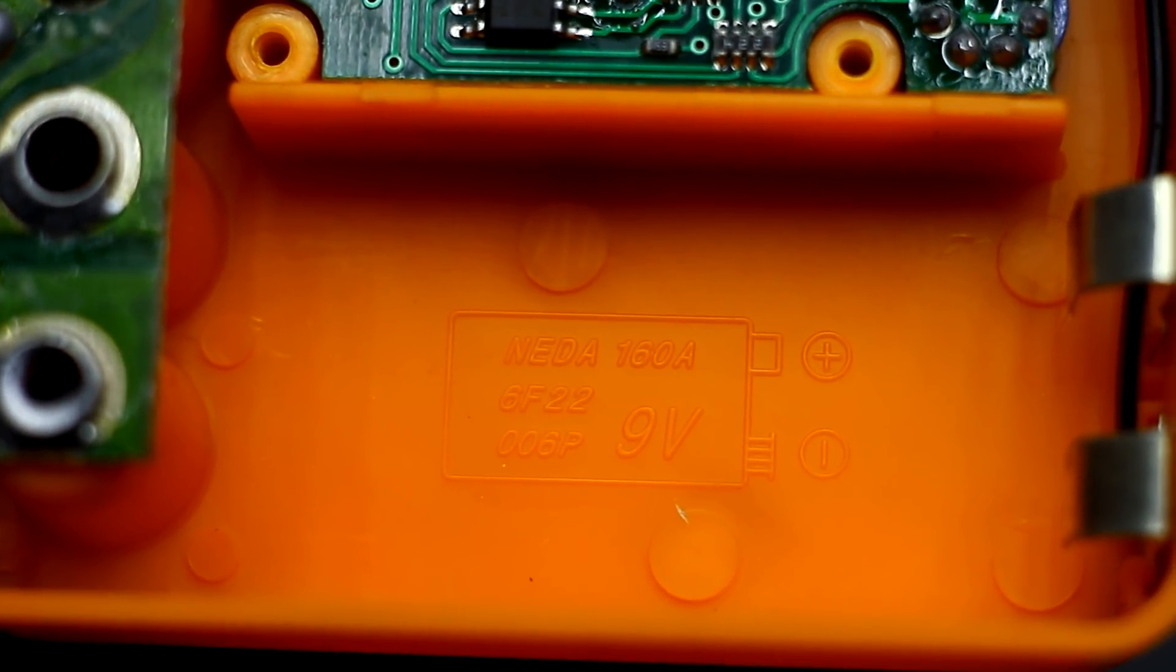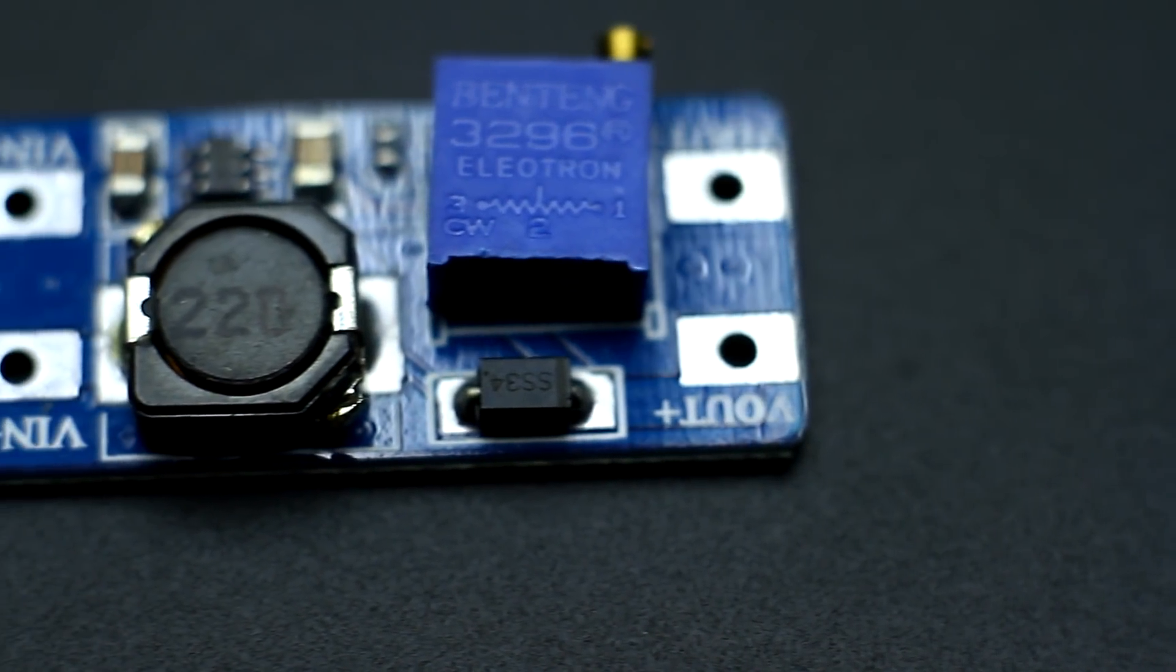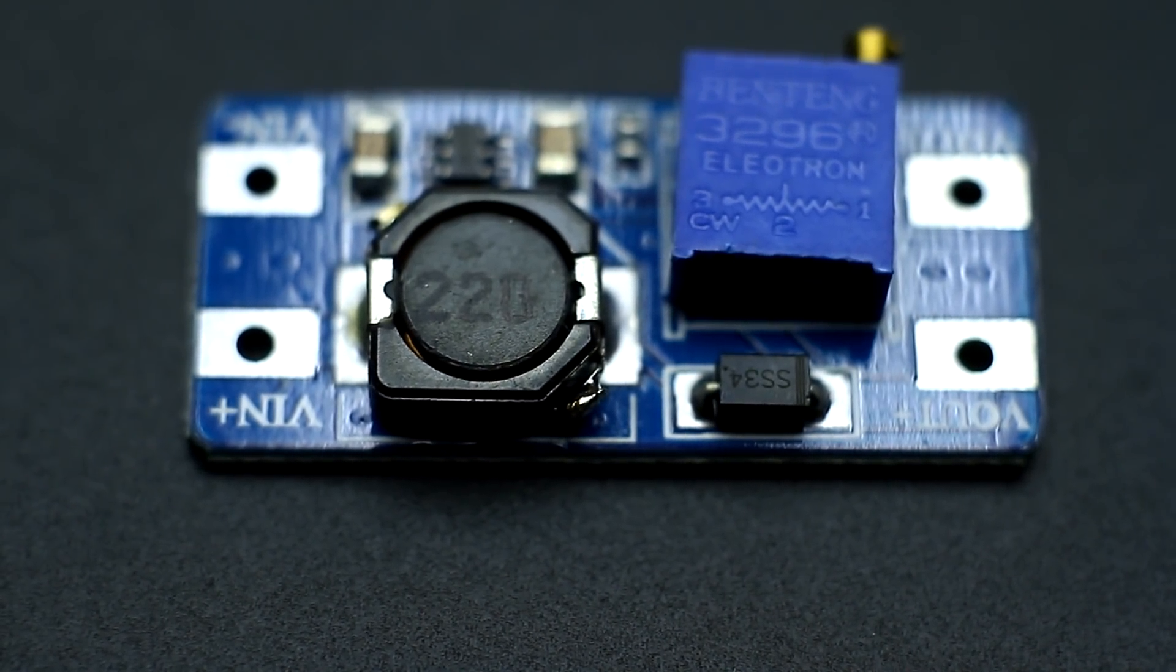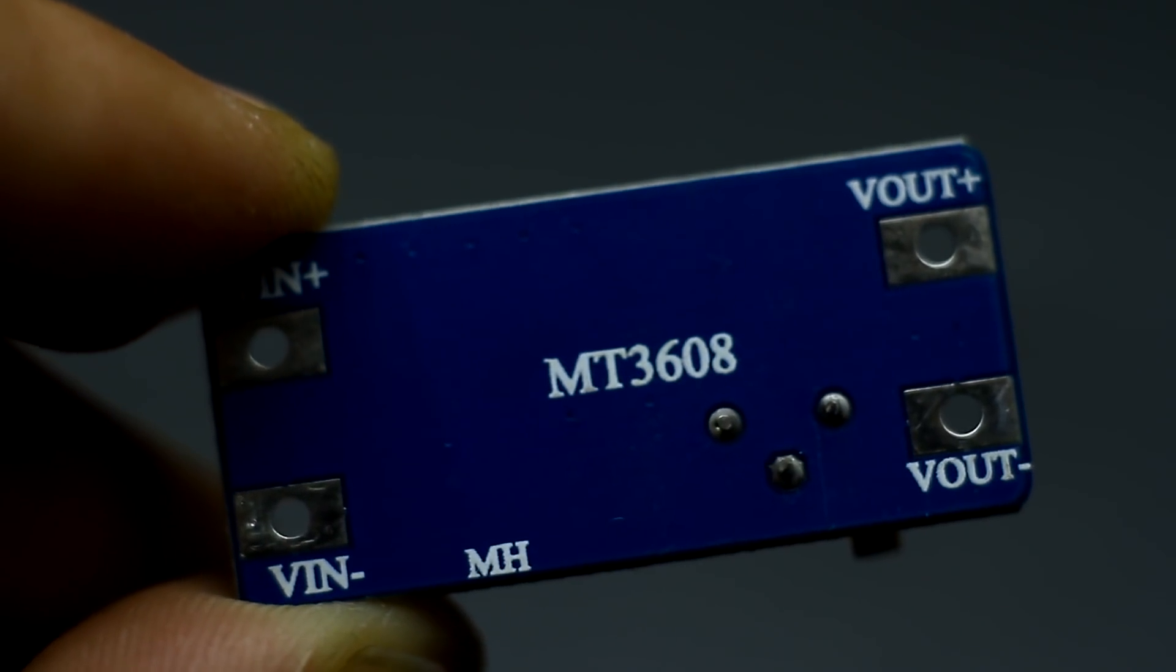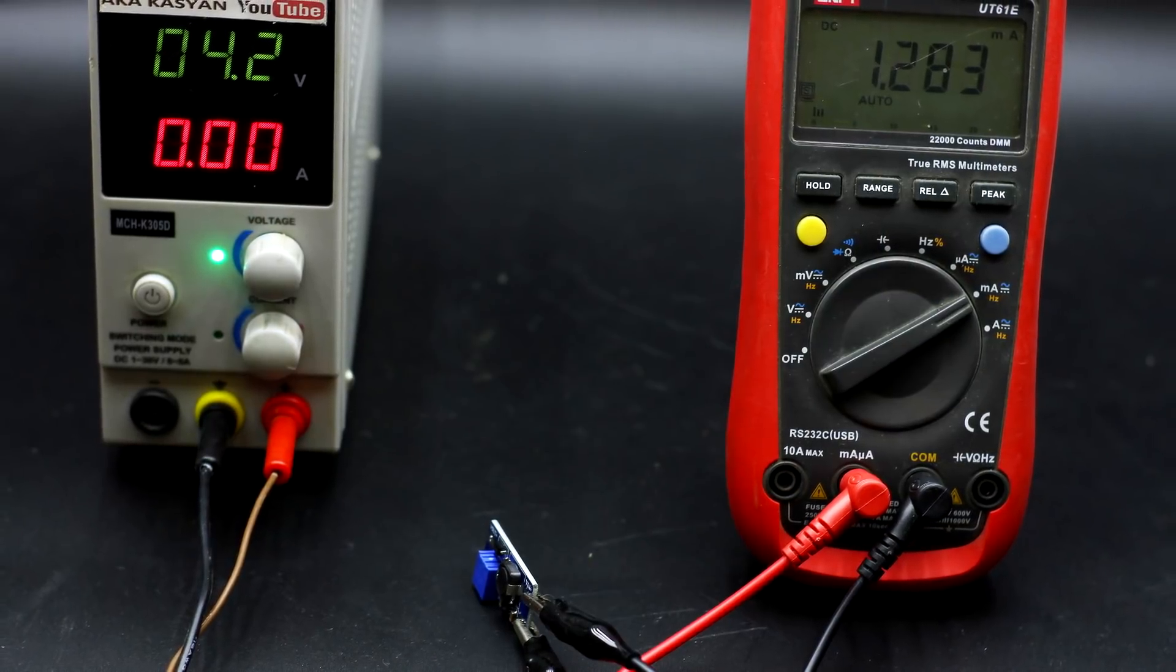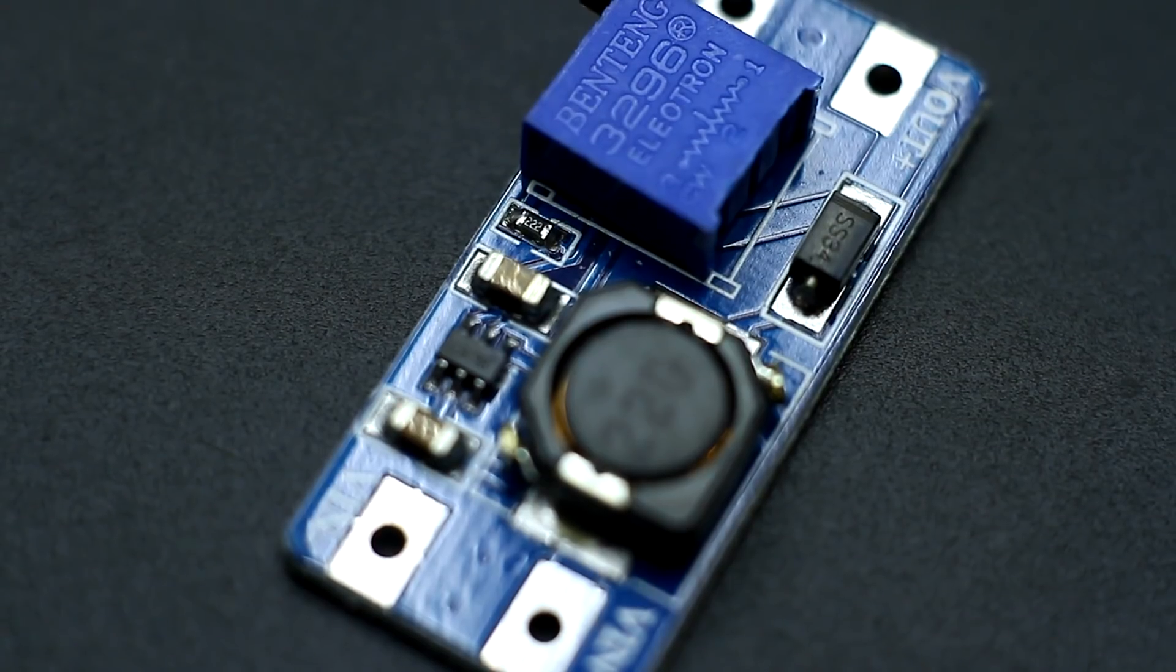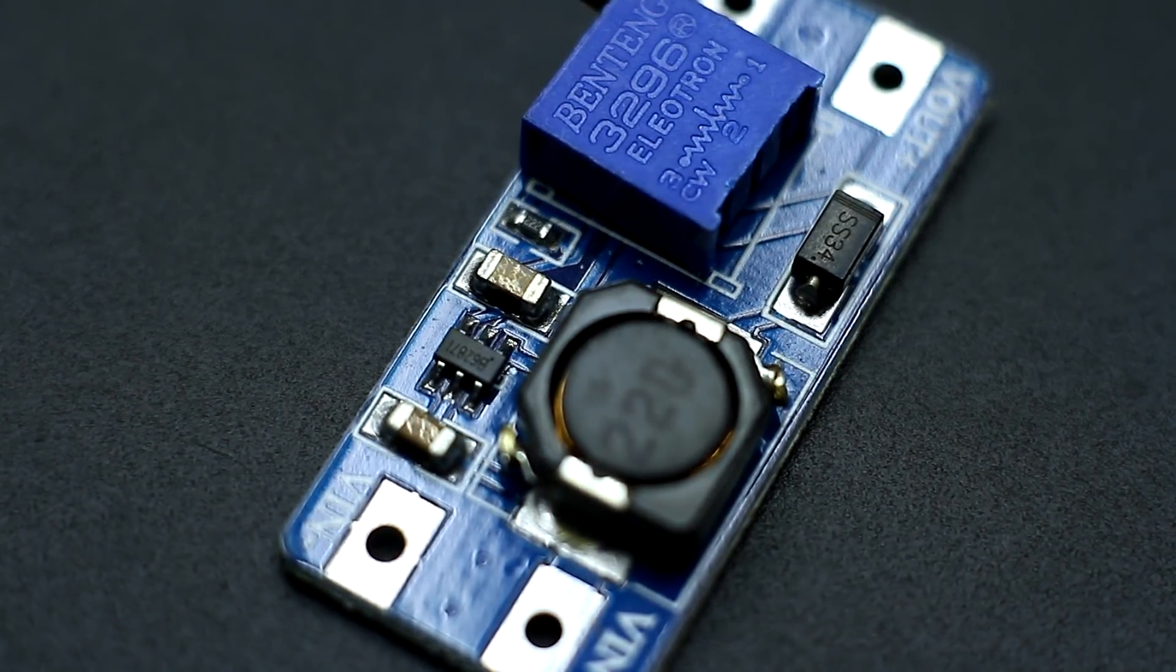Buy a compact DC-DC converter isn't a problem. The popular MT3608 board costs about $1 and is affordable for everyone. This converter has no-load current of about 1.5mA. That is, the battery current is consumed even if the multimeter is disconnected.